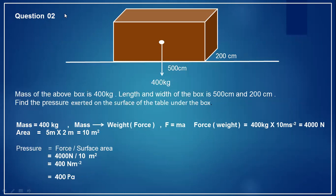In question two, the dimensions of the box are given in centimeters and the mass is given in kilograms. The key difference from question one is that mass is given, not weight. In the pressure equation, we need force, not mass. The mass is 400 kilograms. We must first convert mass to force using Newton's second law: F equals MA.